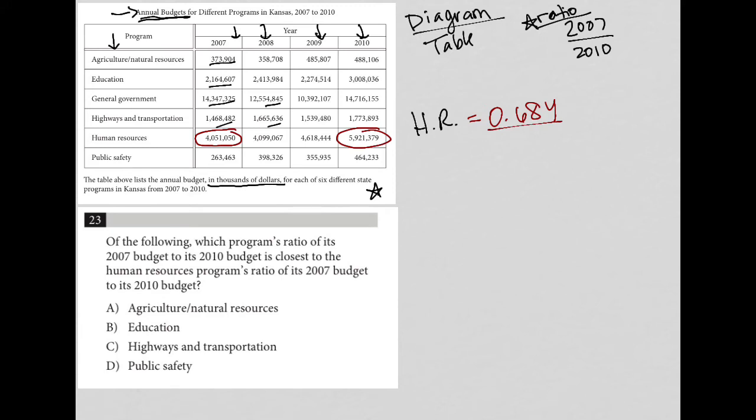The question that I'm being asked to find out is which one of these other four gets closest to it. So I'm going to start off with agriculture. So agriculture, I have my 07 number, my 2010 number. So I have 373904 divided by 488106. And there I get 0.76.